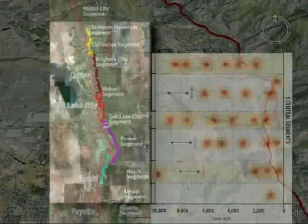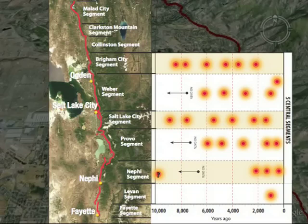The composite recurrence interval, or how often a large earthquake has occurred on the central portion of the Wasatch Fault, is approximately once every 300 to 400 years.